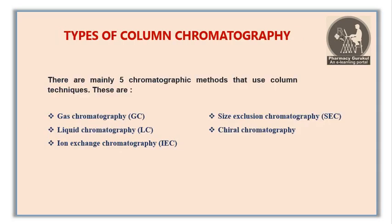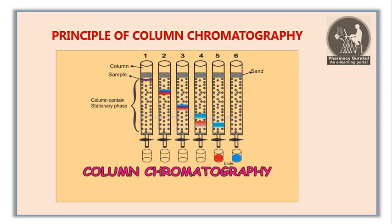There are mainly five chromatographic methods which use column techniques. The first is gas chromatography, the second is liquid chromatography, the third is ion exchange chromatography, the fourth is size exclusion chromatography, and the fifth is chiral chromatography.